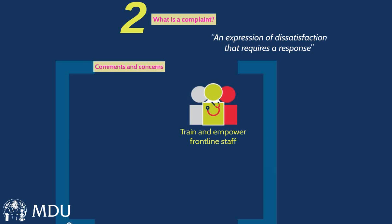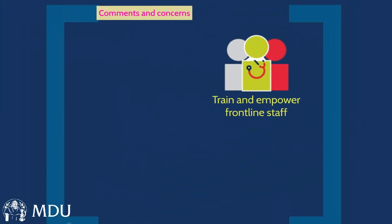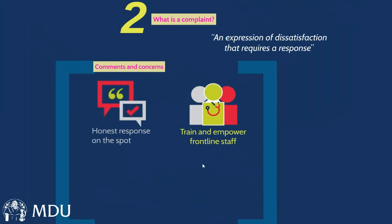A formal complaint can be an oral complaint, a written complaint, or an email. The only thing that falls outside those regulations is where somebody comes to the desk, says they're unhappy about something, and somebody can deal with the issue straight away and defuse it. It is important that you train and empower frontline staff to recognise complaints and deal with them when appropriate. If it's within their competence, giving an honest response on the spot is entirely appropriate. Everything else really does fall under your formal procedures and warrants a formal response.